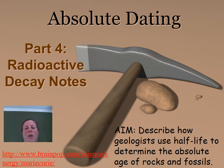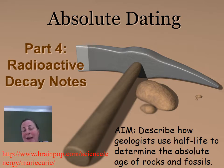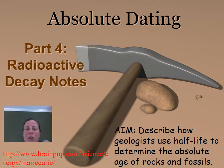Hello, welcome back to our last set of notes in our Earth's history unit. This section is about absolute dating, while all the other sections we've done so far have been about relative dating. So now we're going to learn how geologists are able to find the actual date of any kind of fossil or rock layer using something called half-life and radioactive decay.